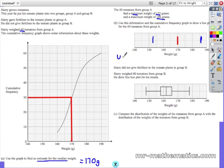Now we need to find the upper quartile which will be three quarters of our entire sample which is 60, so that will be at the 45.